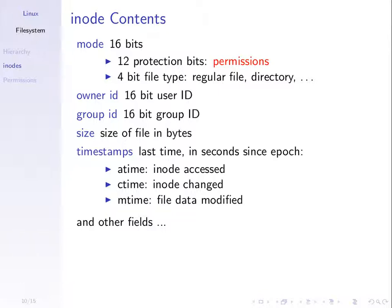There's an owner ID — a 16-bit value specifying the owner of the file. There's also a group ID specifying the group owner. A size entry specifies the size in bytes. And there are timestamps: access time, change time — specifically the time when the data structure was changed and the time when the data inside the file was changed. We'll usually focus on the time when the file data was last changed.